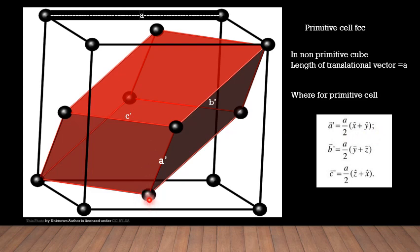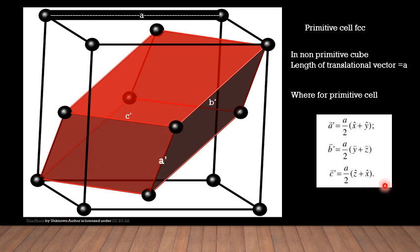So a' has the vector a/2 (x + y). The b' point is lying in the yz-plane, so the vector for b' is a/2 (y + z). And c' is lying in the zx-plane, so its vector is a/2 (z + x).